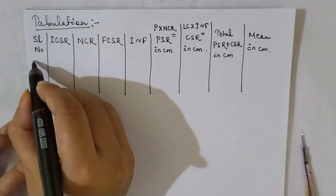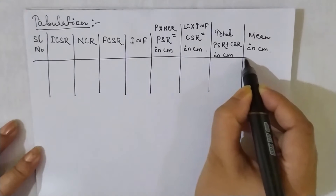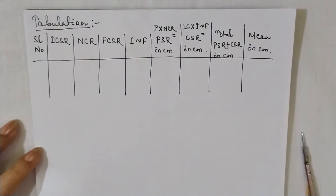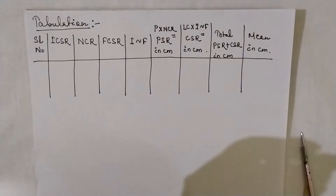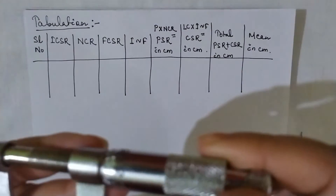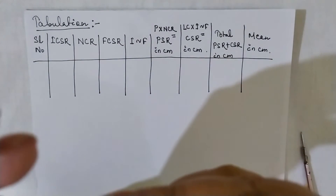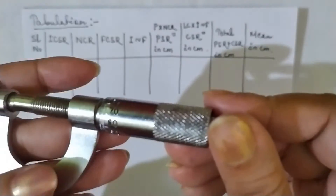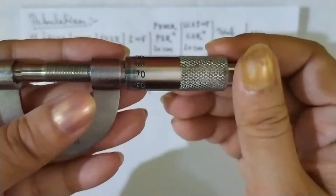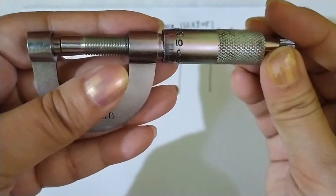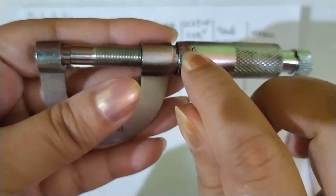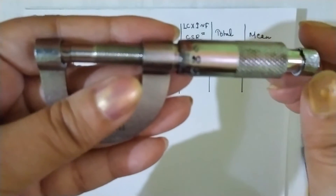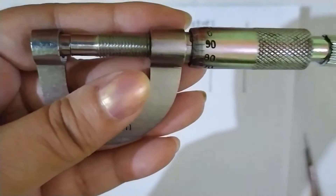Let's start with how to take the measurement. I am choosing here a 100-division type of circular scale screw gauge. As you can see, this division is 90 and this one is zero, confirming it is a 100-division type.